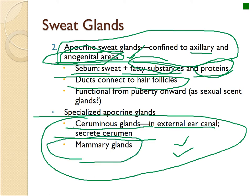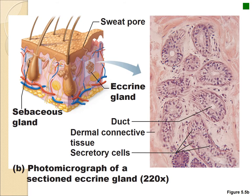We also have mammary glands — the breasts — which are modified sweat glands. Looking at eccrine glands under the microscope, you see tubes in cross-section, located in the middle part of the dermis, with cuboidal cells, a duct, and surrounding collagen fibers and fibrocytes. Connective tissue is found beneath the epithelium, holding it in place.